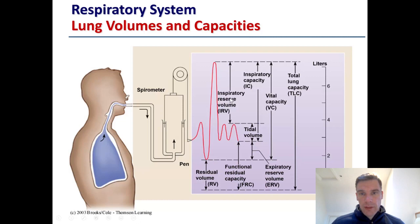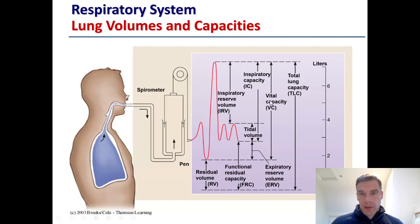So first we'll calculate our tidal volume, then our inspiratory reserve volume, then our expiratory reserve volume. Once we have these measures we can calculate our vital capacity. In the next video I'll show you equations for vital capacity, but effectively it includes our tidal volume plus our inspiratory reserve volume plus our expiratory reserve volume — basically everything we can breathe in and breathe out.